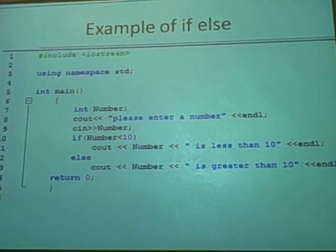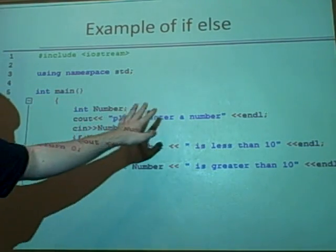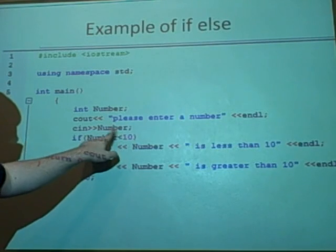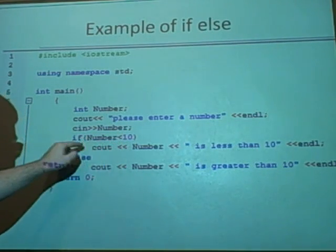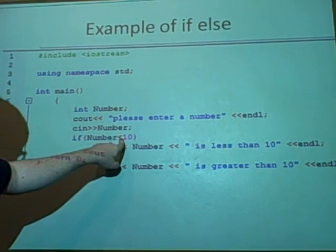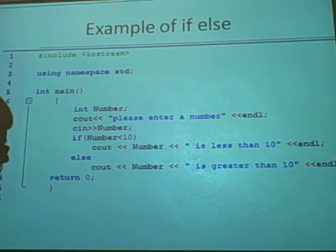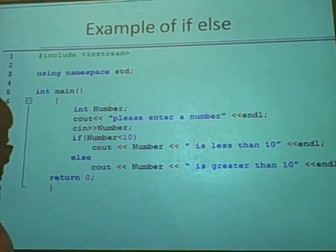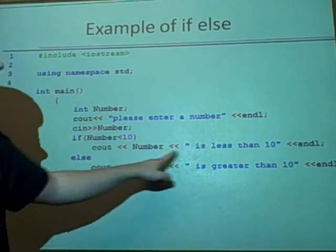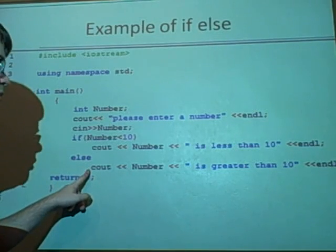The last one is the if-else, and I think this is the most useful really. So we've got an integer at the number again. It asks us for a number, just like before, and that defines it to the integer number. Now if the number is less than 10, then we're saying output that the number is less than 10. Otherwise, output that it's greater than 10. And because it's a single line underneath the if and underneath the else, we don't need curly brackets.